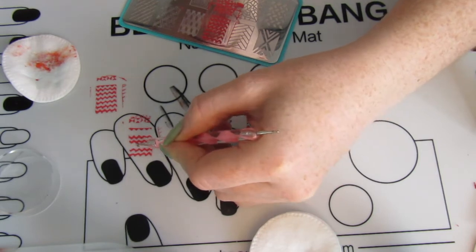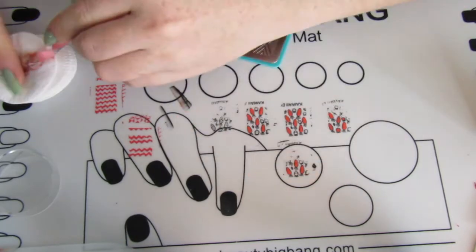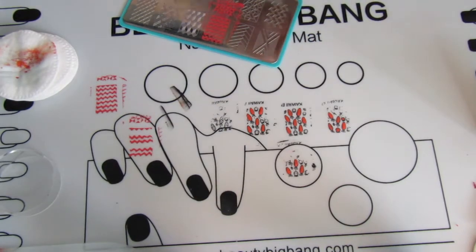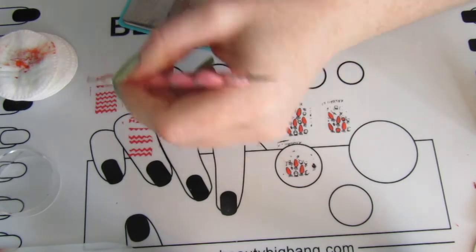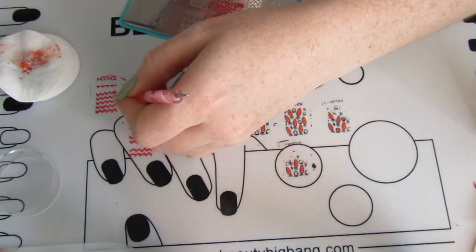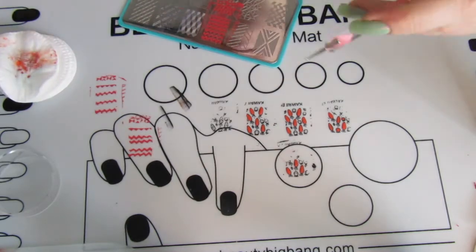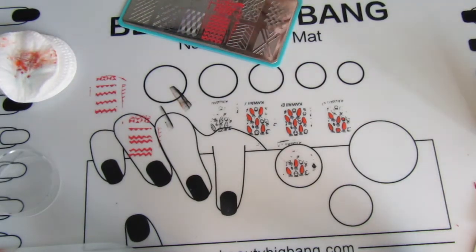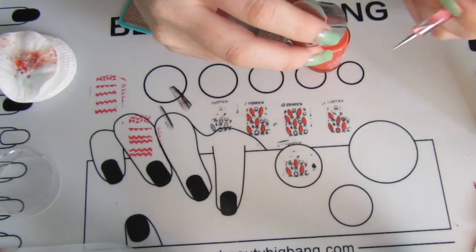To do this, you just use a dotting tool and gently move it across. When you do this, I recommend having a pad with some nail polish remover on it. Just make sure the nail polish remover doesn't touch the stamping mat because it will destroy the mat, which you definitely don't want. I have another makeup pad underneath just to create a barrier and protect the mat from damage.